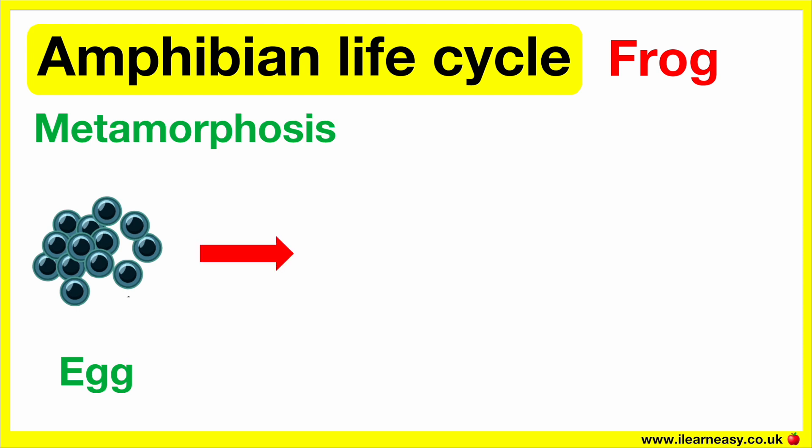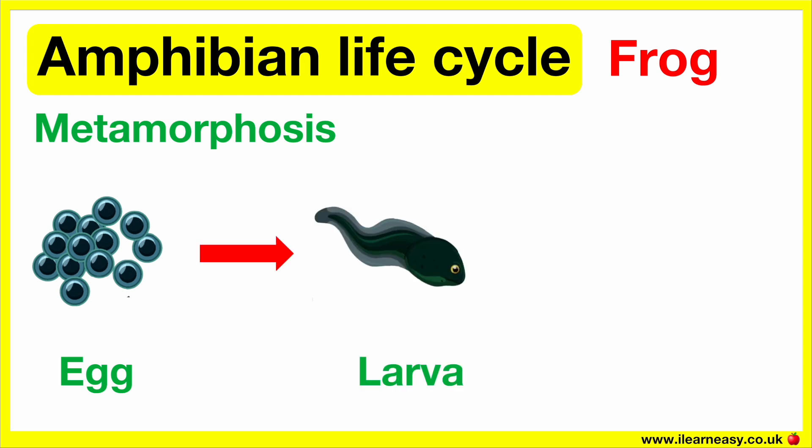A tadpole begins to form in the egg — this is known as the larval stage. The tail of the tadpole begins to form within the egg before it hatches. This long tail allows it to store nutrients to feed on at a later stage. Once the egg hatches, the tadpole is able to breathe in the water using its gills. The tadpole begins to grow its legs — first its back legs and then its front legs.